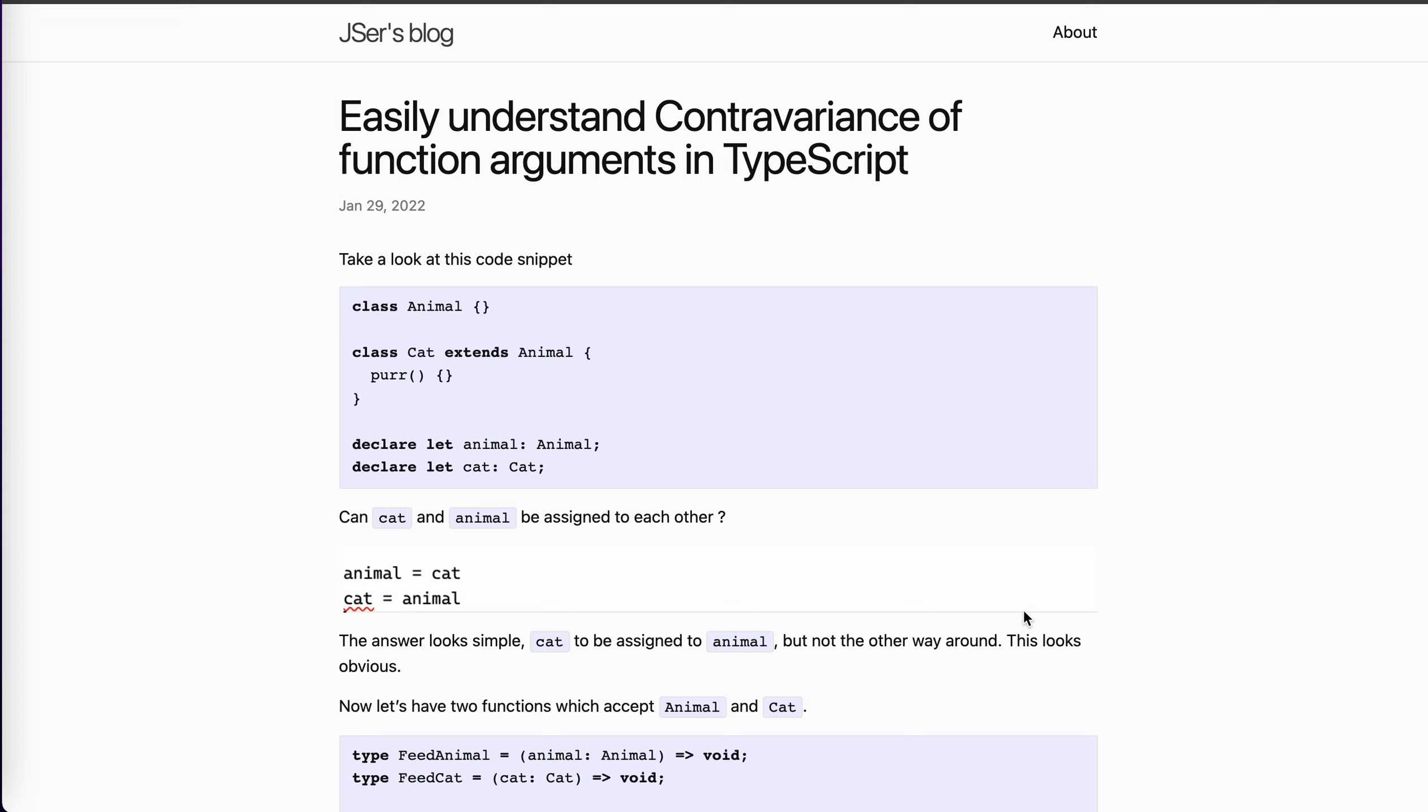Hey guys, how's everything going? This is Jaycer. In this video, let's talk about the contravariance of function arguments in TypeScript. I think I've covered this in one of my videos about TypeScript, so you don't need to search on the channel. I put this post into my blog, jaycer.dev. So if you're interested, please refer to my website. Let's begin.